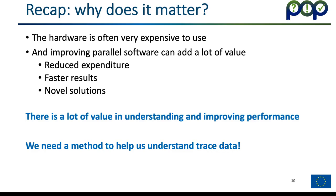If you've got an application performing badly and trace data that's very complex and difficult to understand, it might be tempting to just live with the poor performance. But it's useful to remind ourselves why performance matters. Usually the hardware is very expensive to use, and even when it isn't, improving parallel performance can add a lot of value — it can reduce expenditure, get results much quicker, and might enable novel solutions which wouldn't be possible otherwise. What we really need is a method to help us understand the trace data.